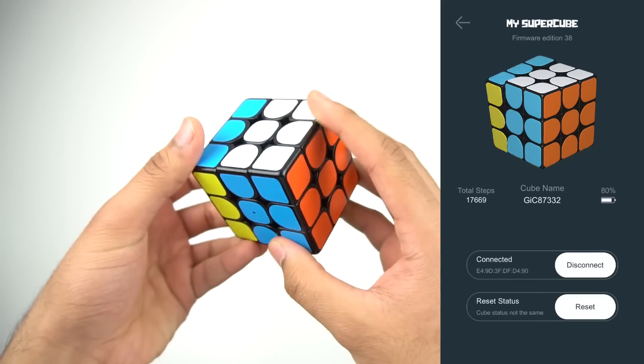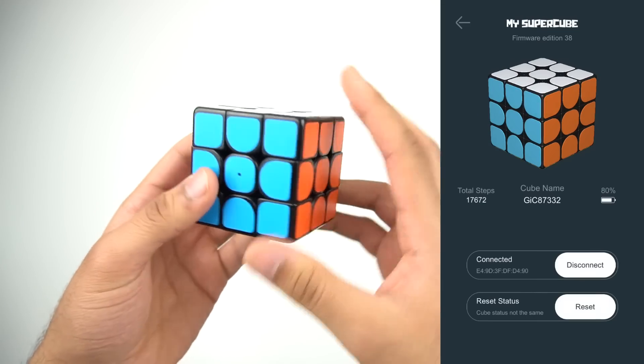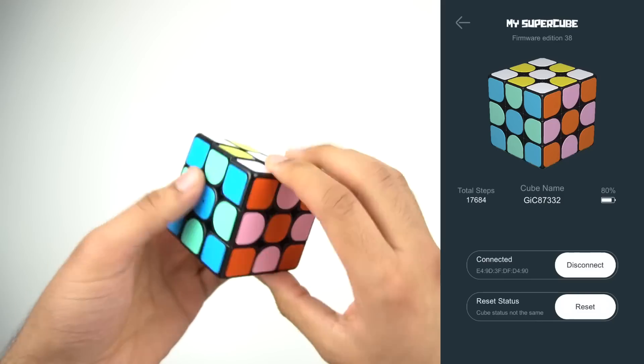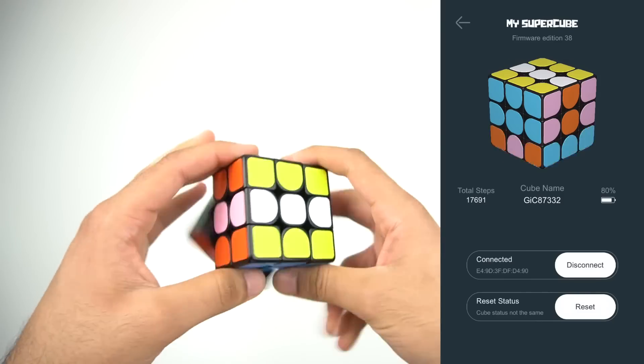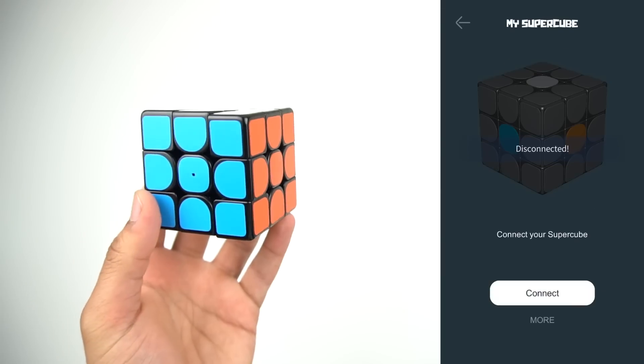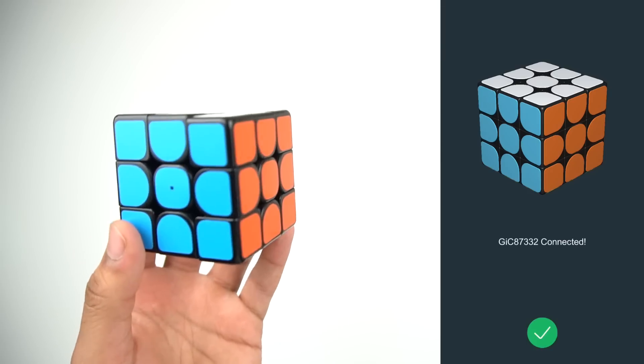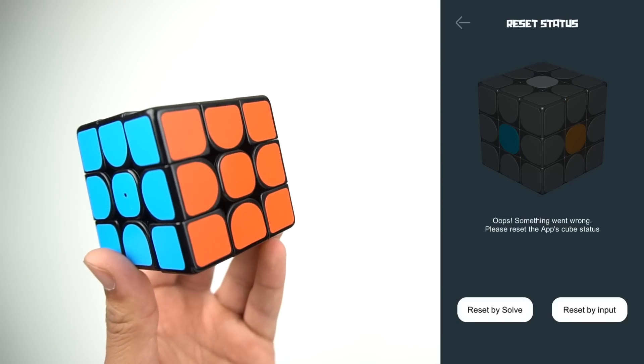Starting with the tools, the first one is more of a settings page where you can manage your cube. You can connect and disconnect it, see the current state, make real-time moves, see the total number of moves you've ever made on the cube, and also have an option to recalibrate the sensors with the app. It's some pretty basic, but very useful stuff.